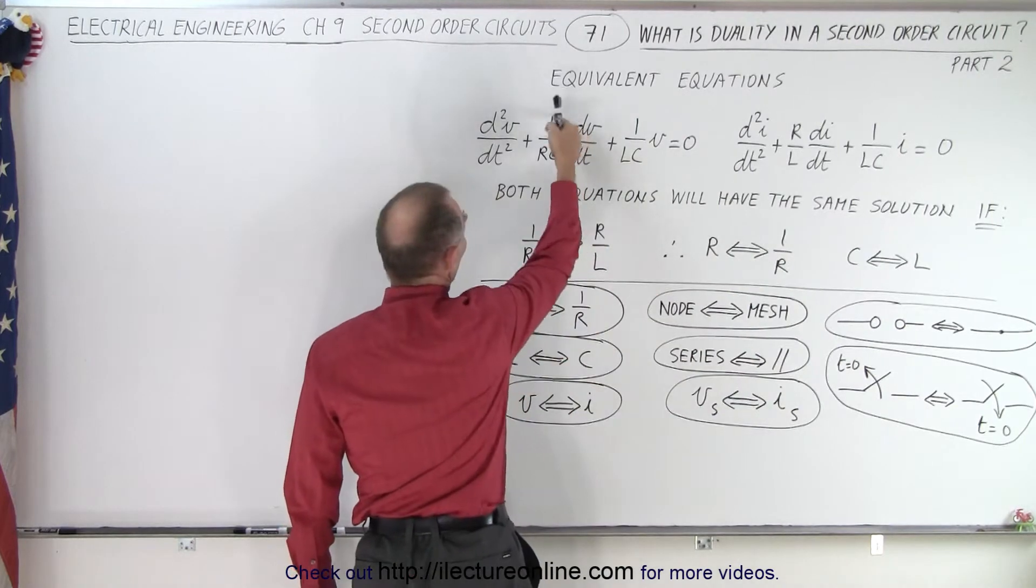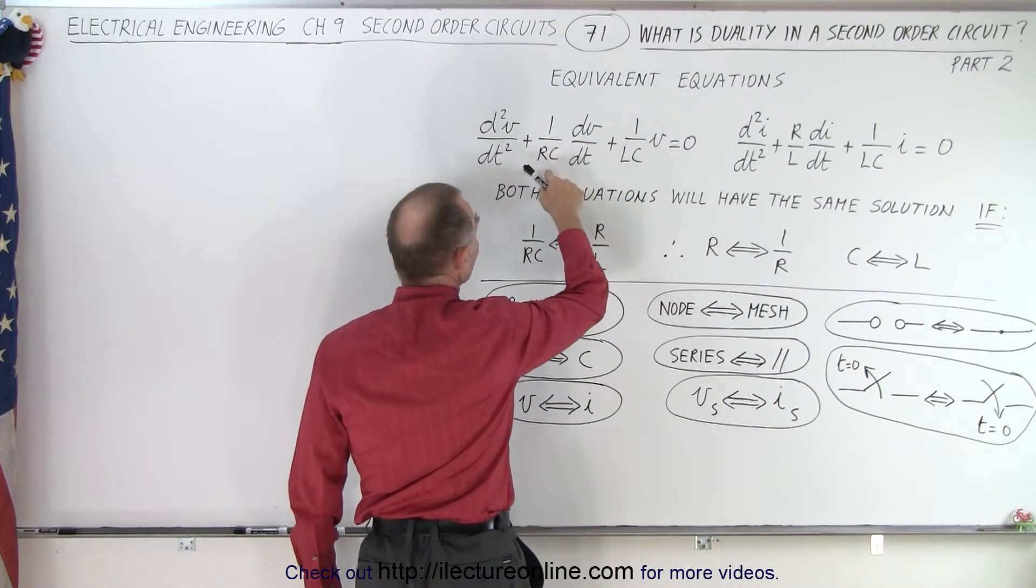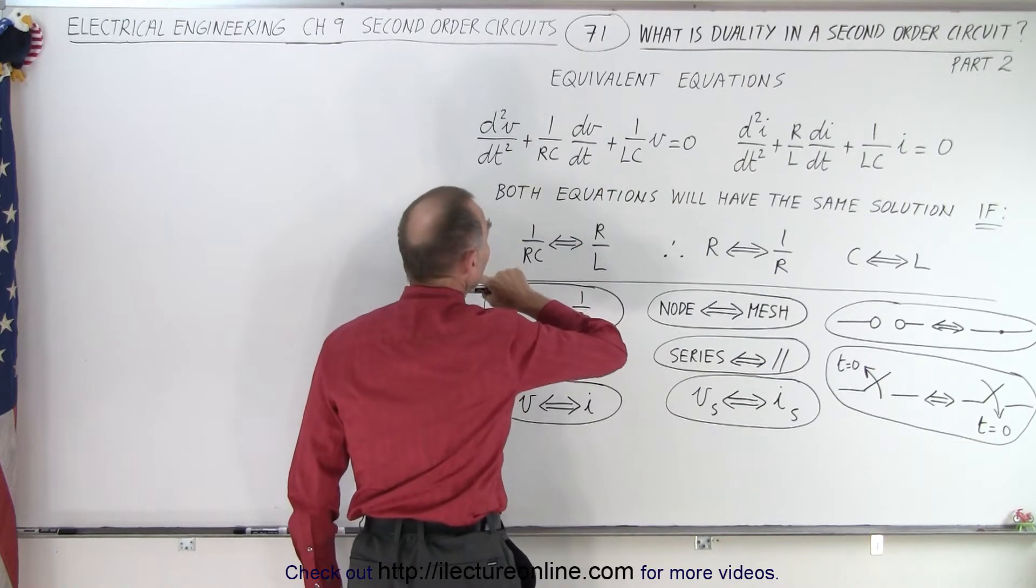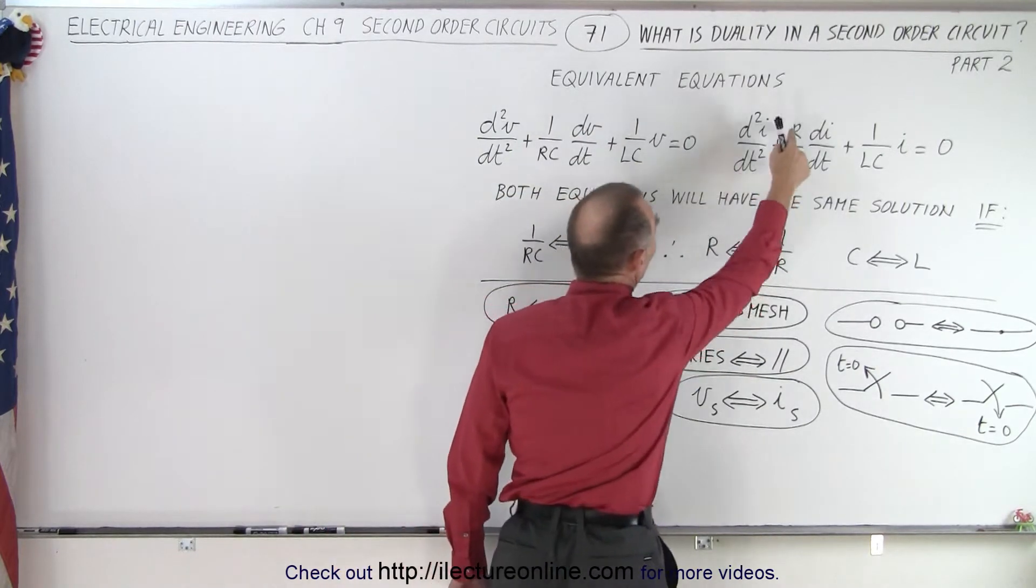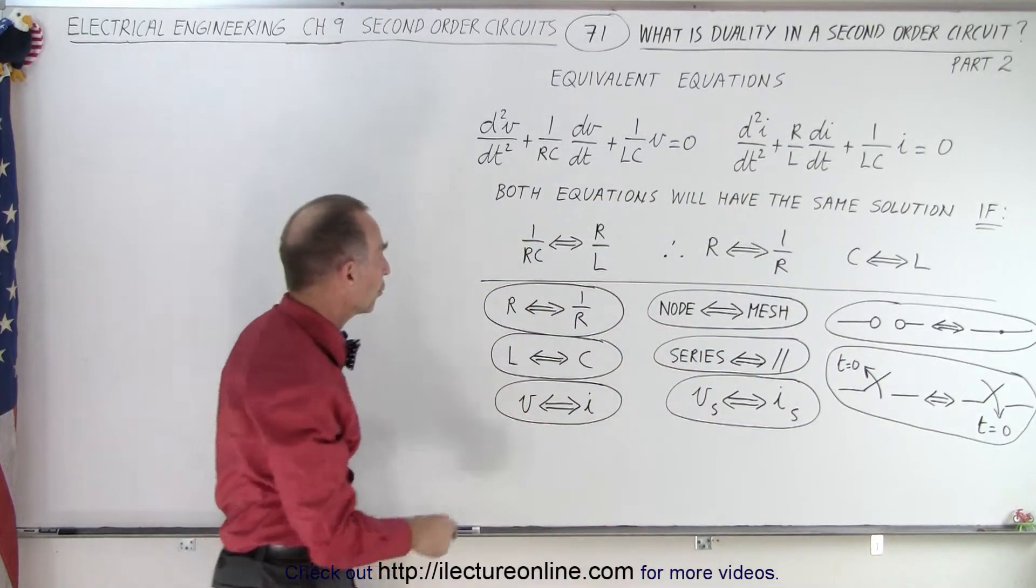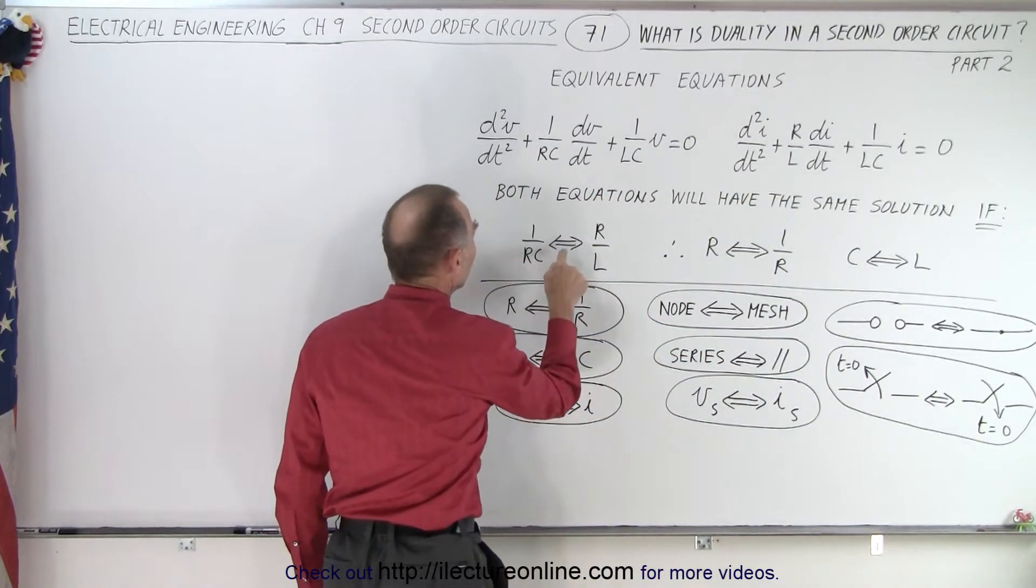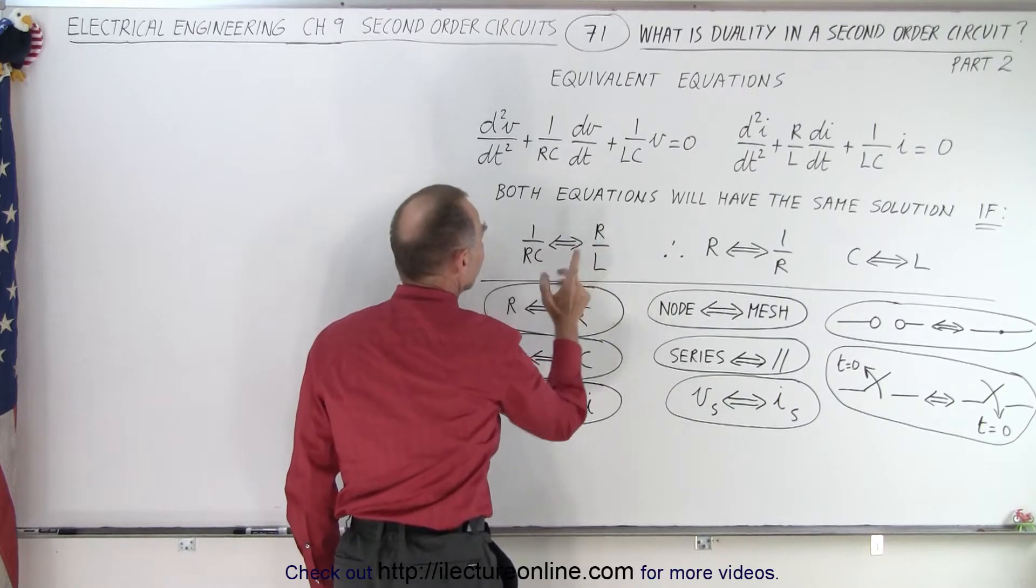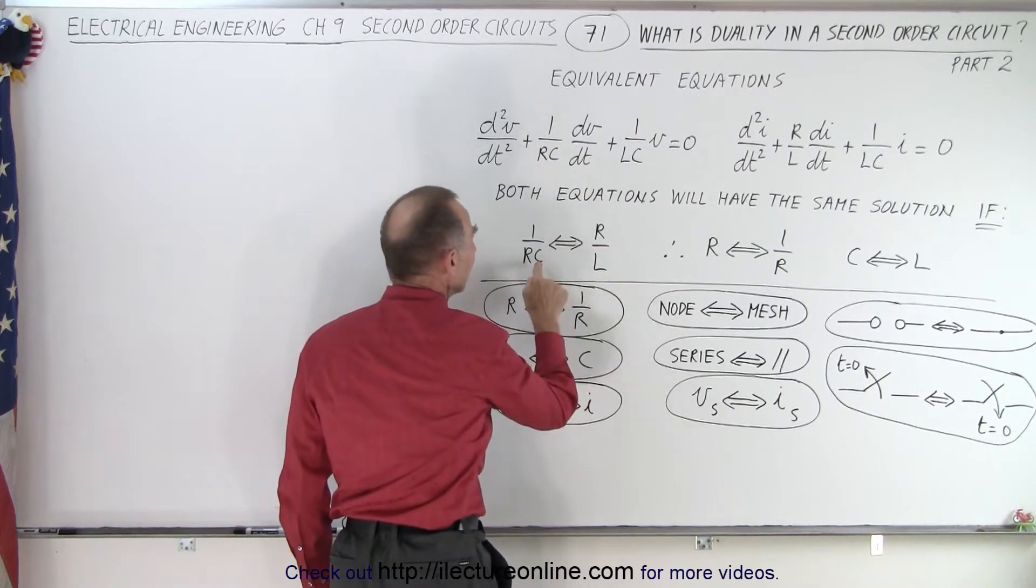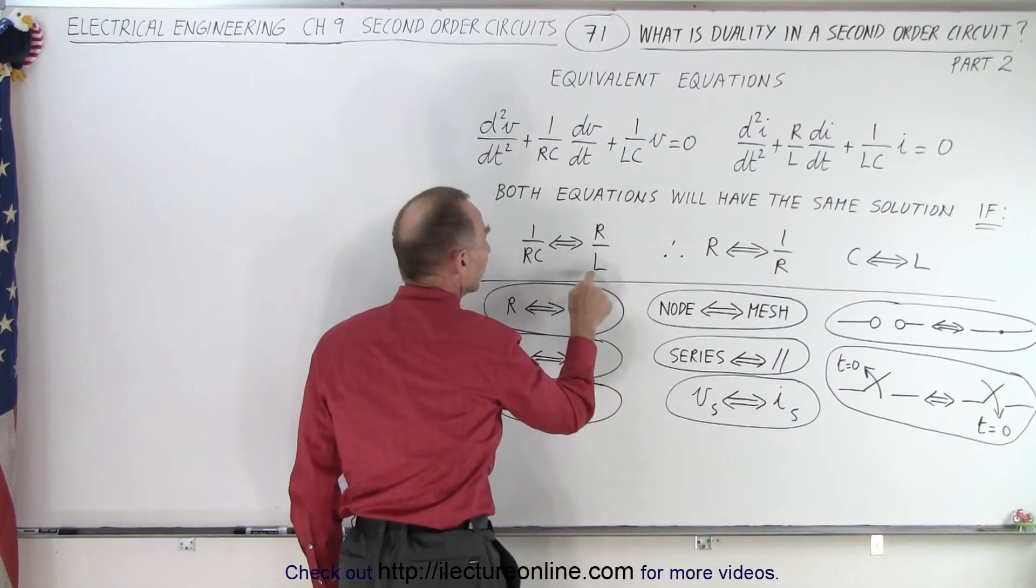We take one over RC that's in front of the first derivative portion of the equation and equate it to R over L in the first derivative portion of that equation. In other words, we set 1/RC equivalent to R/L. That means that R becomes the inverse of itself and the capacitance is replaced by an inductor.